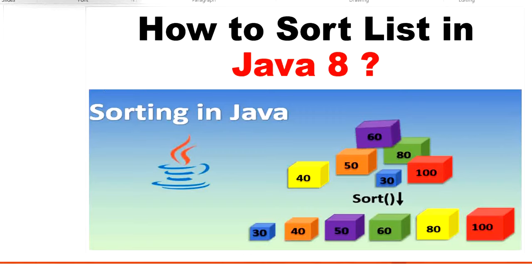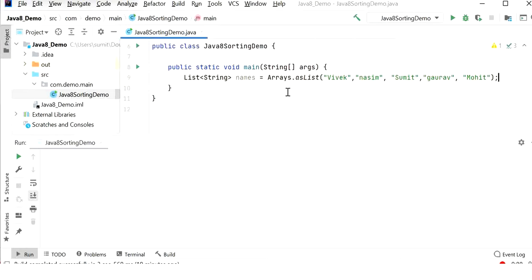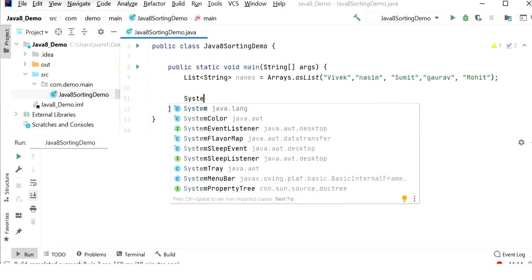In this video we are going to learn how to sort a list in Java 8. We are going to see several examples on how to sort a list. During project development, every developer comes across situations where sorting is mandatory. Today we will mainly focus on sorting using Java 8. I have created a Java class Java8SortingDemo, declared a list of strings, and created a list of names with string values. I will print this list without sorting first.